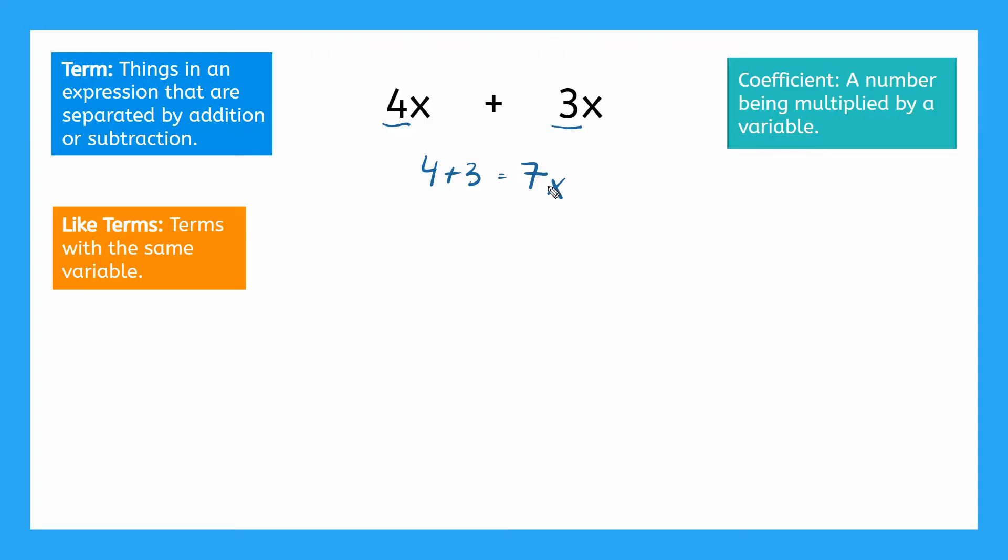But we can also think of it like we thought of the chocolate bars. Remember, if we had four chocolate bars, and then I gave you three more chocolate bars, you would have a total of seven chocolate bars. But these chocolate bars could be x's or anything. And if you have four of something like four x's, and then I'm giving you three more x's, then you would know you would have seven x's. So both of these ways are correct. And you can think about it either way.